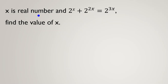x is a real number and 2 to the x plus 2 to the 2x equals 2 to the 3x. Find the value of x. So if we write our equation: 2 to the x plus 2 to the 2x...